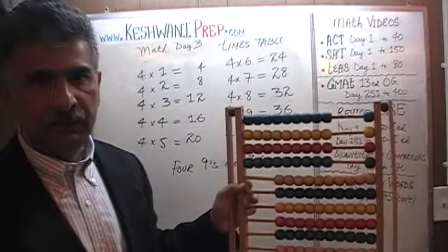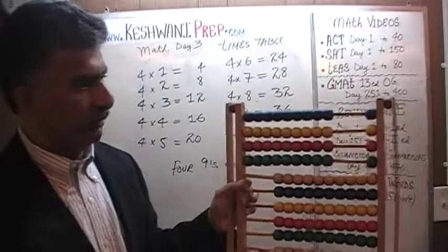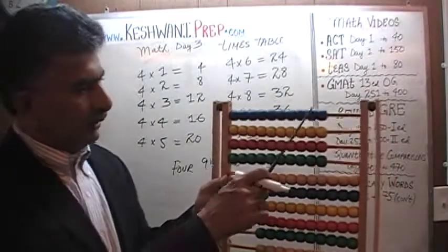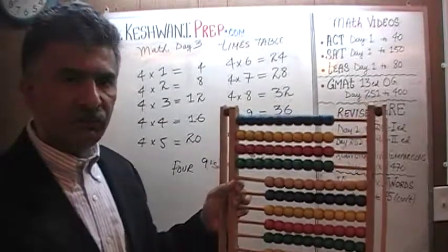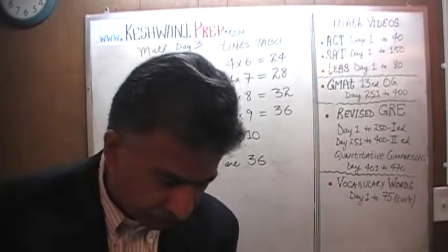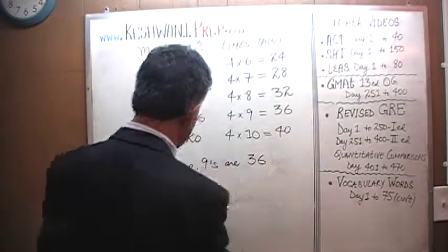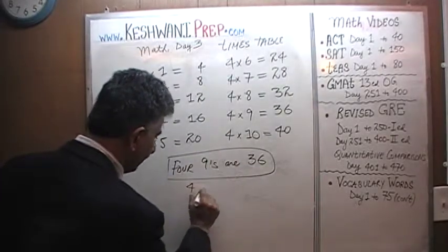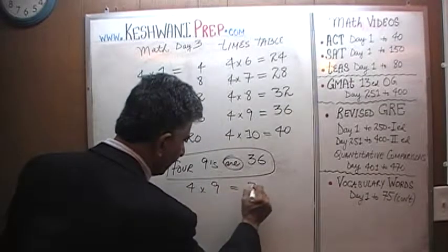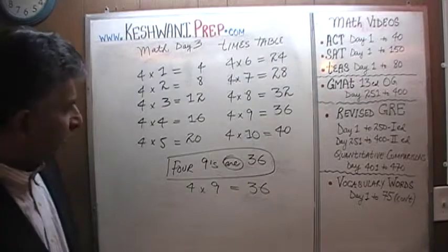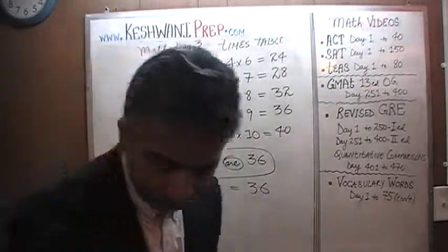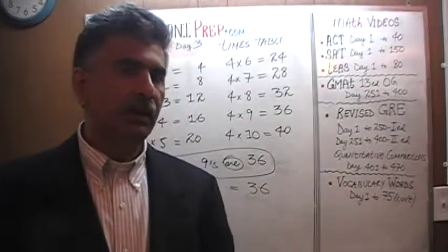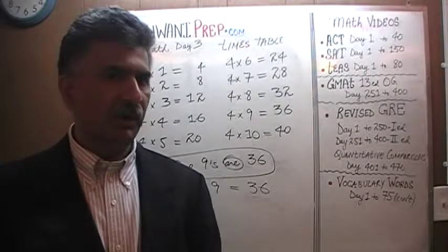Now we need four tens — that's very easy. Just bring everything here: one ten, two tens, three tens, four tens. Counting by ten is very easy: ten plus ten is twenty, twenty plus ten is thirty, thirty plus ten is forty. Four tens are forty. That's the end of our table. Tomorrow we will learn the fives table; we have to go all the way up to twelve. Then we will begin our process of doing math problems, but first we have to learn our tables.